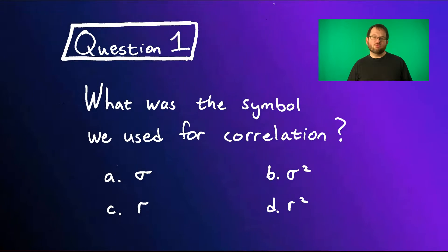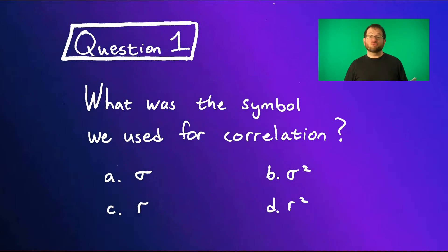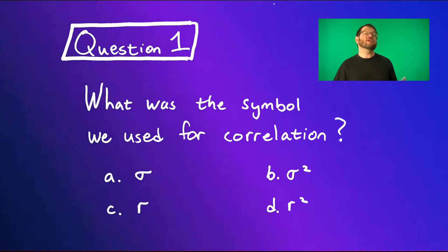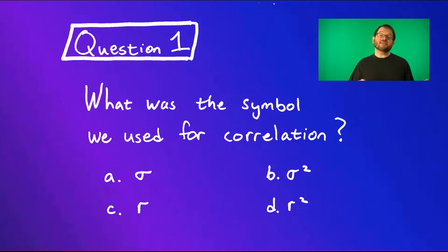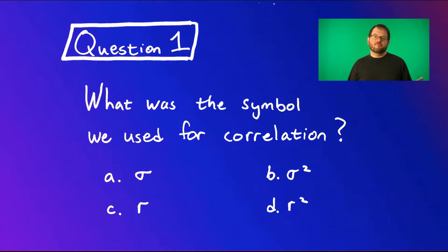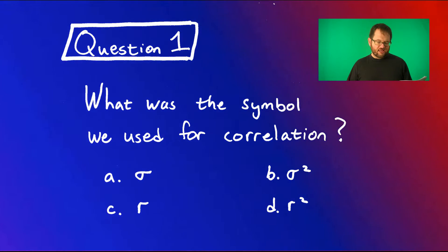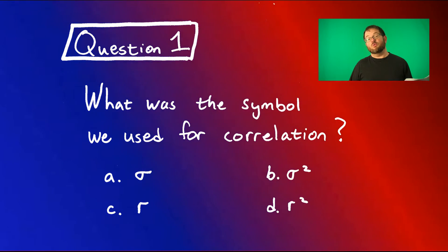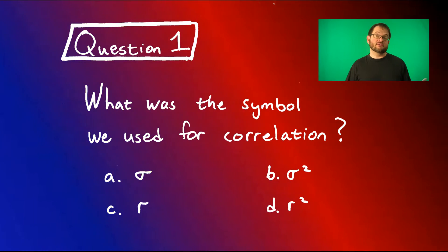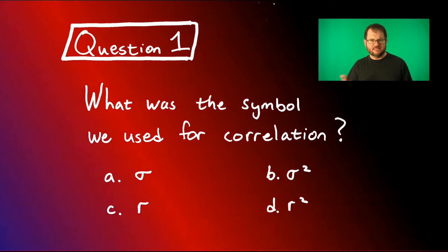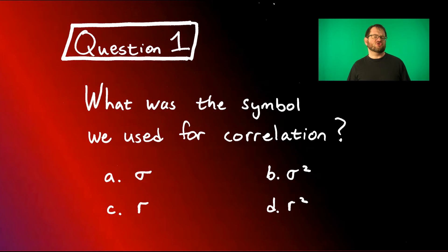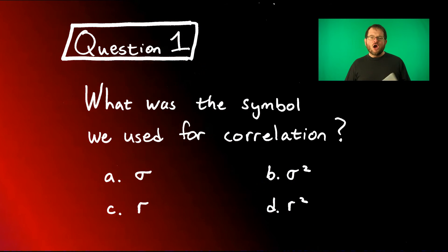And remember, sigma was standard deviation — actually, sigma is standard deviation. And B was sigma squared. That was the variance of the data set, of the process. It was the parameter that described the variance.